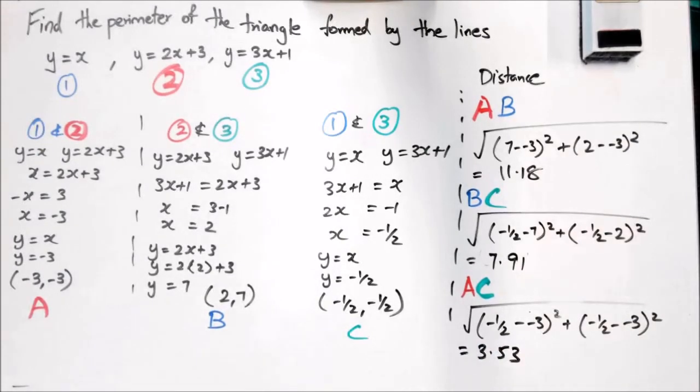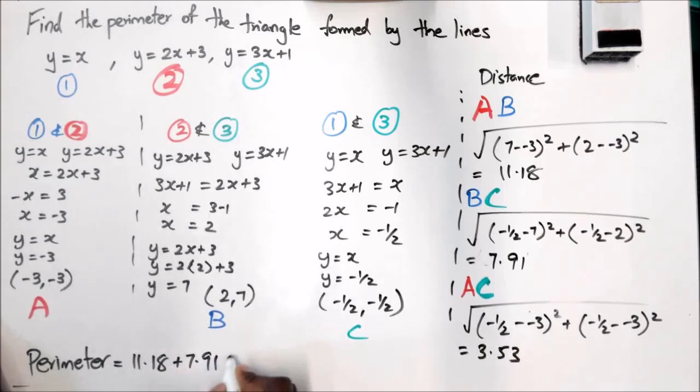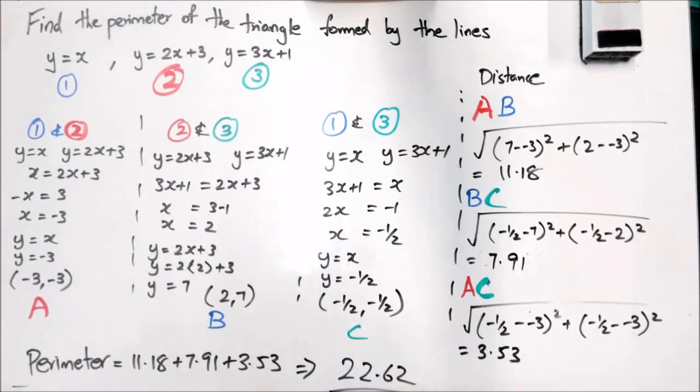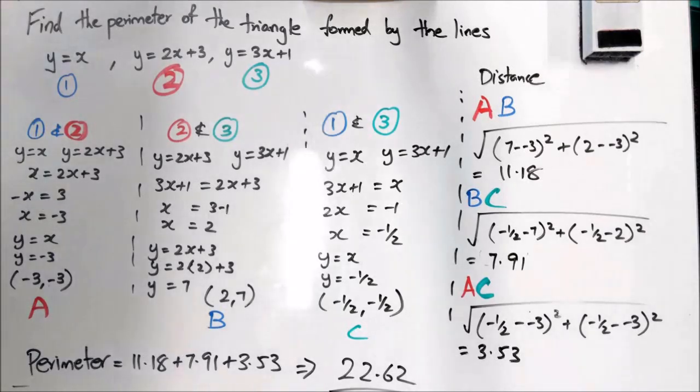Okay, so those are the three distances which means the perimeter is 11.18 plus 7.91 plus 3.53, which equals 22.62. That's what you should be getting or somewhere close to it. Stop that question there.